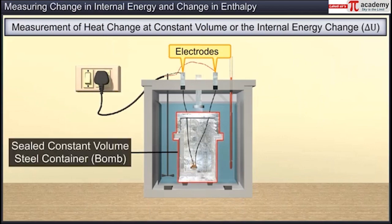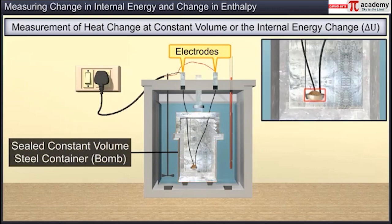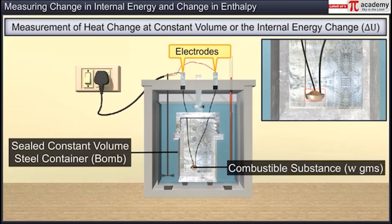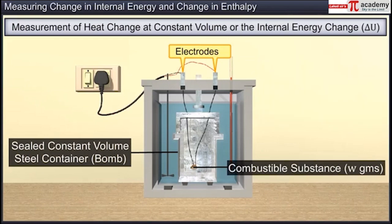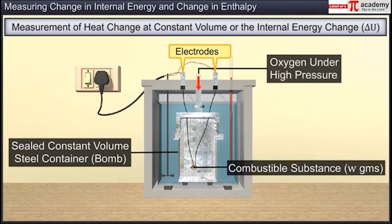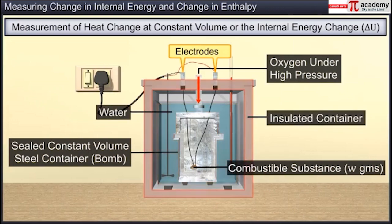The bomb calorimeter consists of a sealed constant-volume steel container known as the bomb, in which the reaction takes place. The bomb can withstand high pressures. A known mass W grams of a combustible substance is placed in the bomb, and oxygen under high pressure is introduced into it.